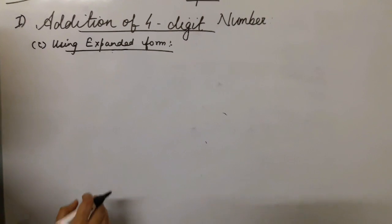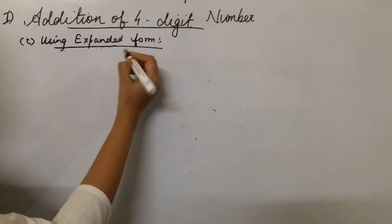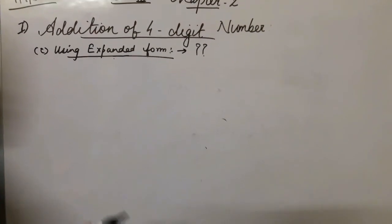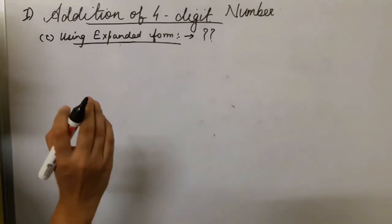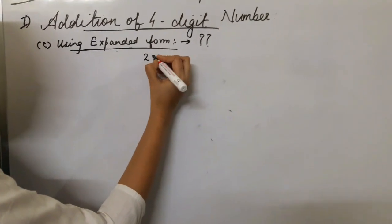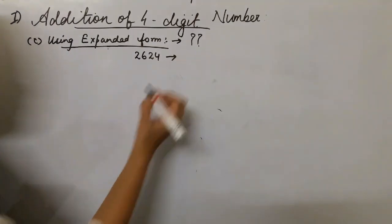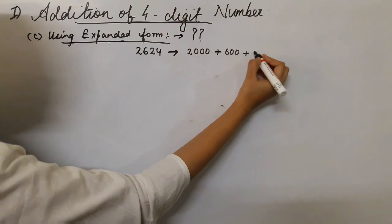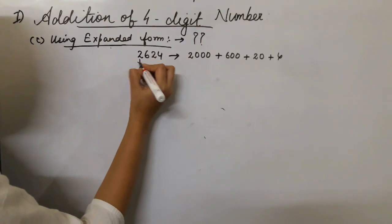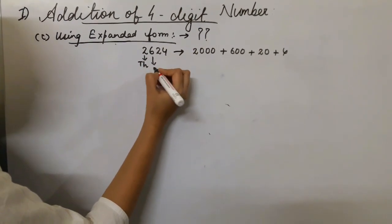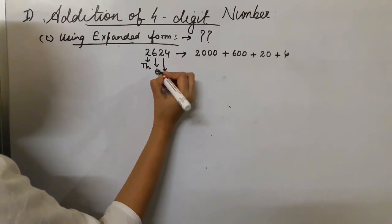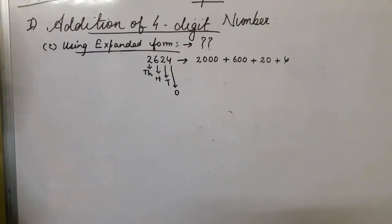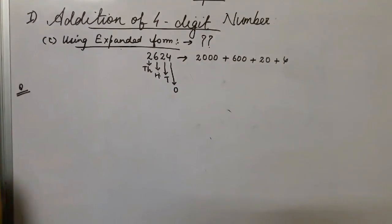Let's discuss the last topic of today's session: addition of 4-digit numbers using expanded form. Expanded form is a notation of writing numbers using place value, where you find the mathematical value of each digit. For example, 2,624 can be written as 2,000 plus 600 plus 20 plus 4, because the place value of 2 is thousands, 6 is hundreds, 2 is tens, and 4 is ones.